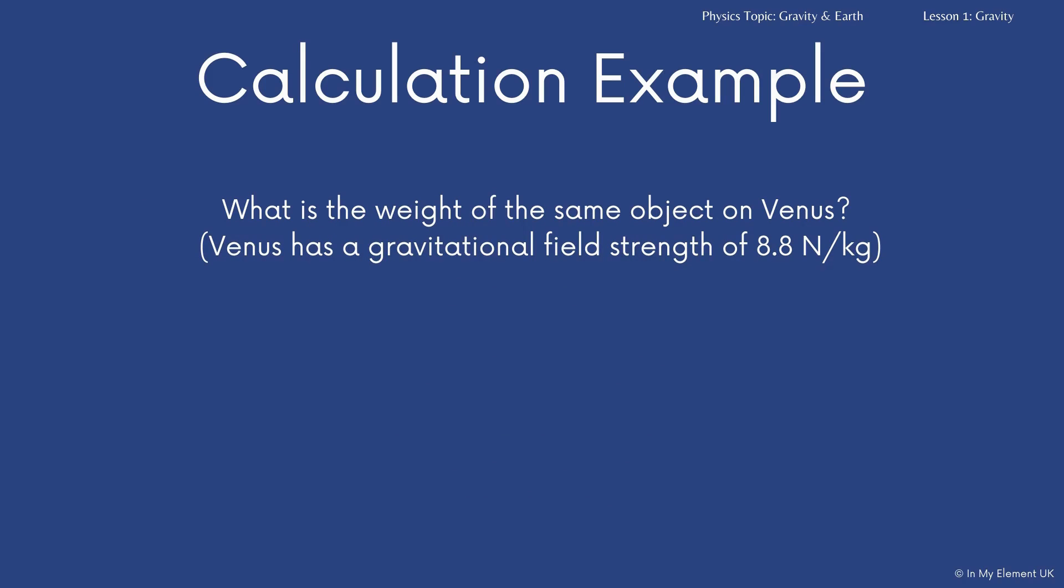Now, what is the weight of the same object on Venus? So they give you the information there that Venus has a gravitational field strength of 8.8 newtons per kilogram. You've already been given the mass of the object because you were told it was 4.5. So you're doing 4.5 multiplied by 8.8. So the weight of that object on Venus is 39.6 newtons.